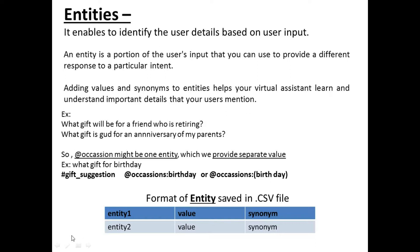The user might want to present a gift to his wife, to his mother, or for any occasion. First we identify the broader intention, and then we move to the closer context so that we can provide the proper answer. Similar to intents, we can store entities in a CSV file, where the first column refers to the entity and the second refers to the corresponding value.